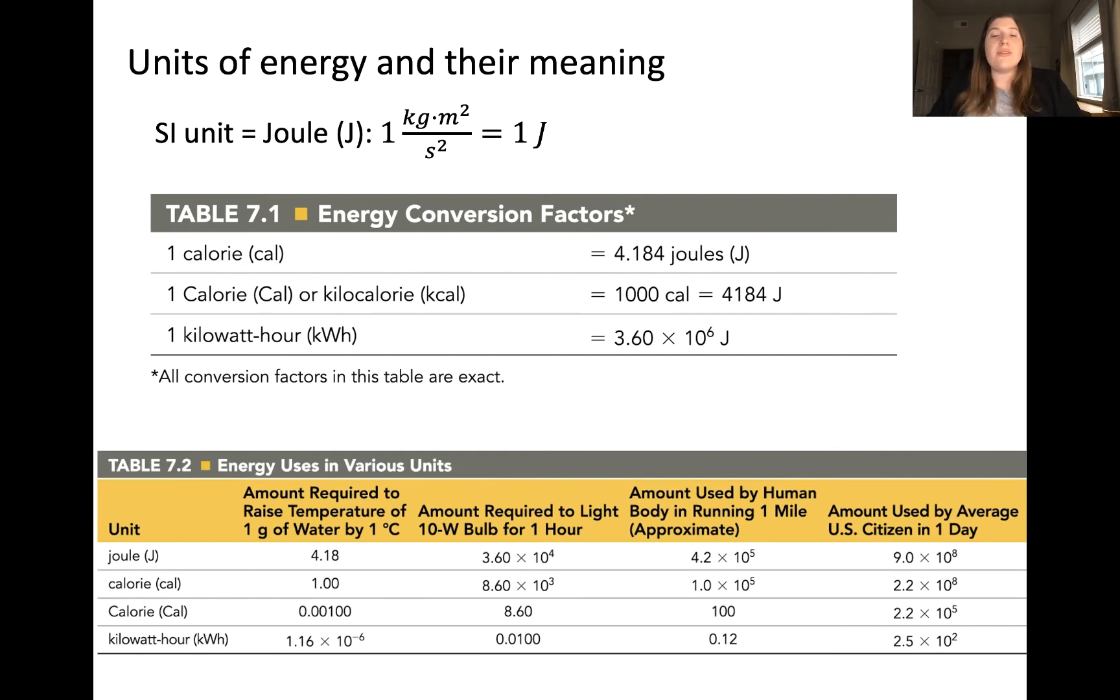This table shows some different reference values to give you an idea of the energy required for certain processes in the various units of energy. Generally speaking, the amount of calories burned after exercising is reported in calories, whereas the average amount of energy that is required to keep a light bulb lit in your house is reported in kilowatt hours. Again, this table allows for comparison amongst the various energy units.